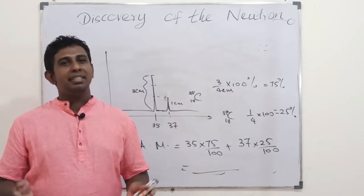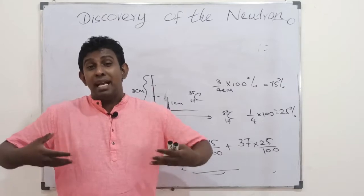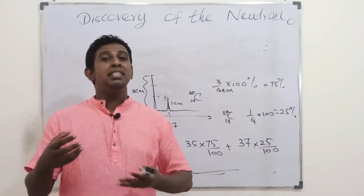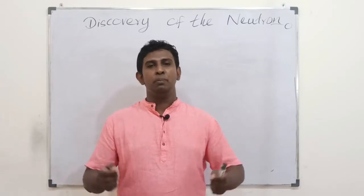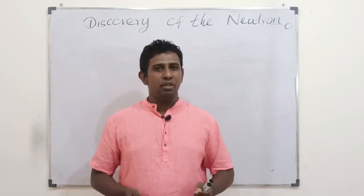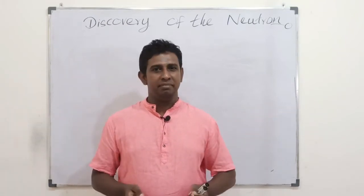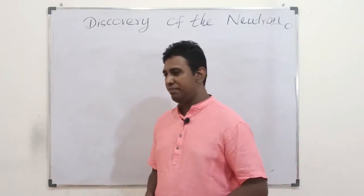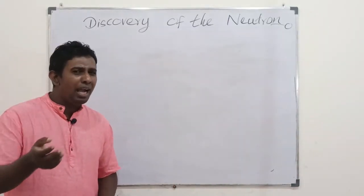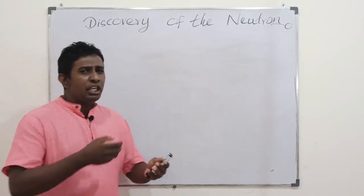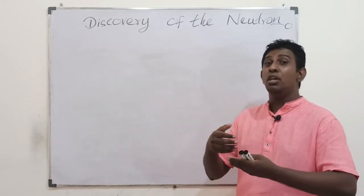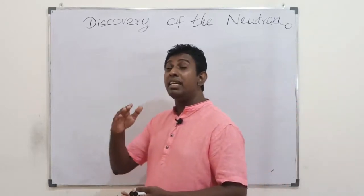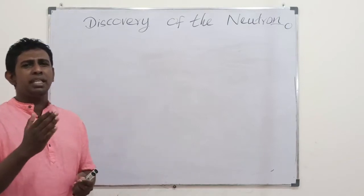That is enough about how masses are measured using Aston's mass spectrometer. Now let's go to our main topic: the discovery of the neutron by James Chadwick. In his experiment, he used a radioactive source emitting alpha radiations. Alpha particles, as we already know, are positively charged. He used a detector that gives a reading when charged particles are present.